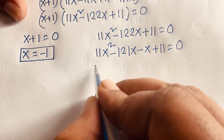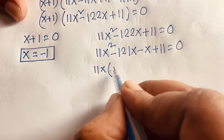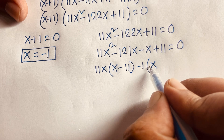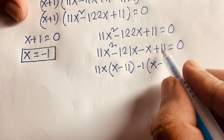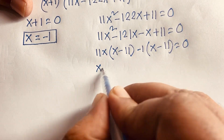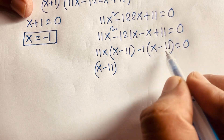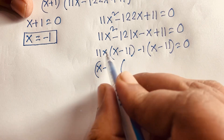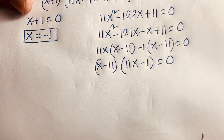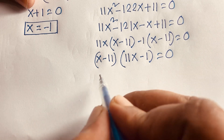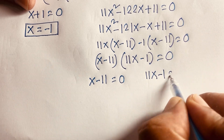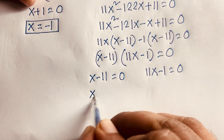Factoring by grouping: 11x is common from the first two terms, giving 11x(x minus 11). Then minus 1 is common from the last two terms, giving minus 1(x minus 11). So we get (x minus 11)(11x minus 1) equals 0. This gives two cases: x minus 11 equals 0, or 11x minus 1 equals 0.